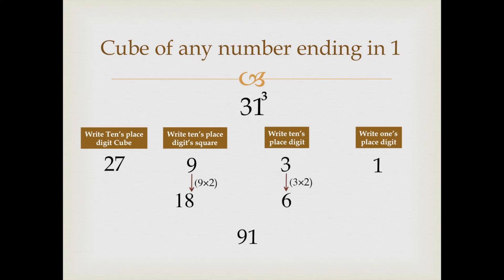9 plus 18 becomes 27. But we will write 7 here and give 2 carry over in the next digit.